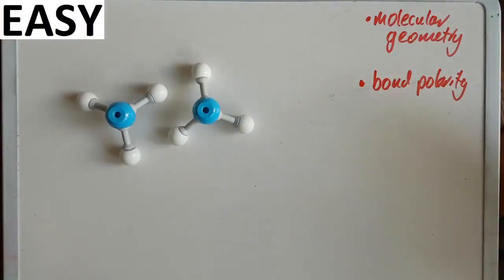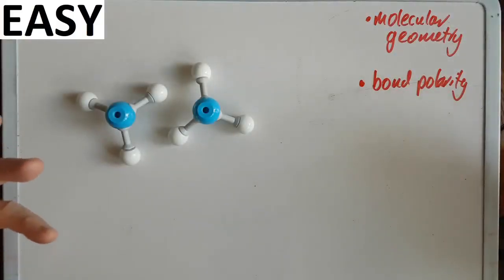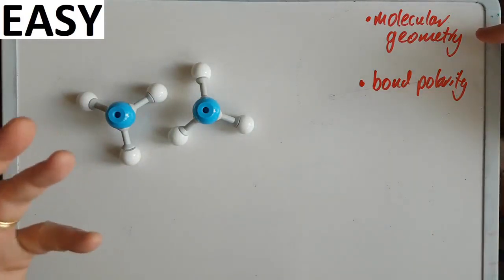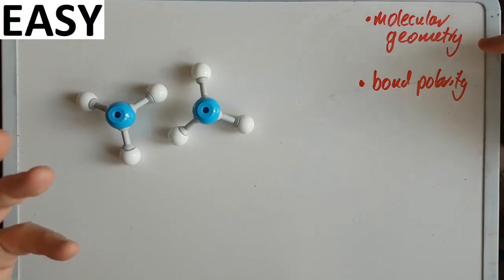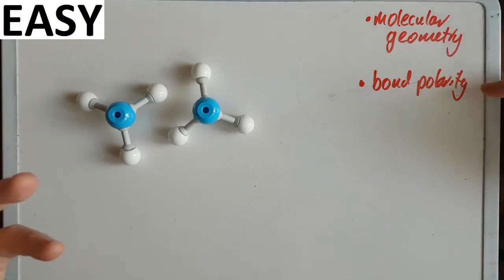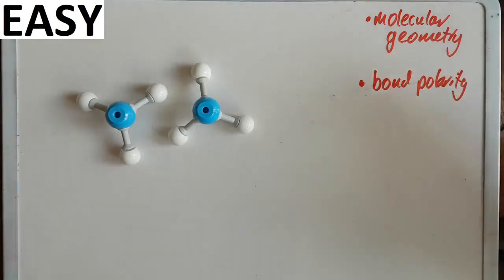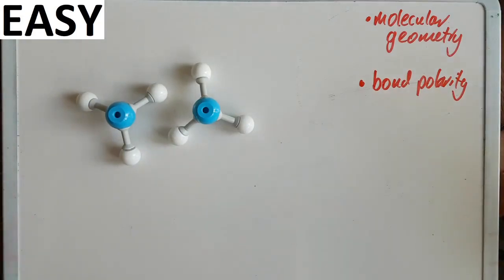So how do you know which intermolecular force is going to be present? You need to look at the molecular geometry — what shape does the molecule have — and the polarity of the bond, which tells you which end of the bond is a little bit negative or a little bit positive, or maybe neutral.